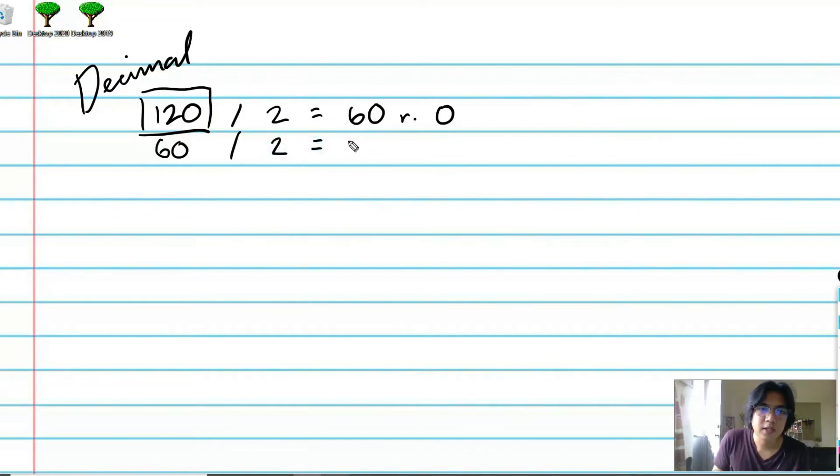60 divided by 2 is equal to 30, remainder 0. 30 divided by 2 is 15, remainder 0. If we have 15 here and we divide it by 2, then that gives us 7.5 or 7, remainder 1.